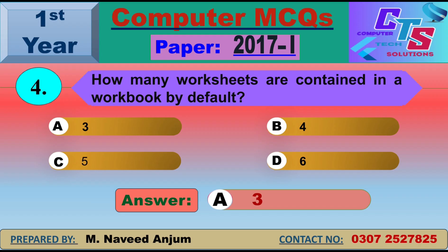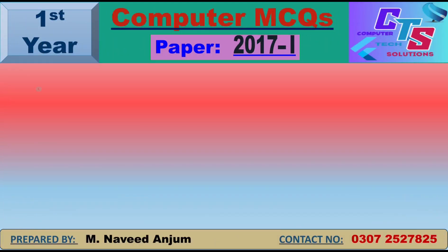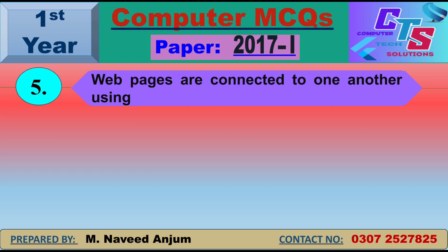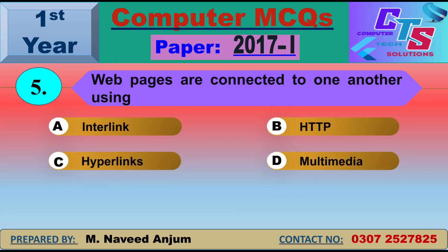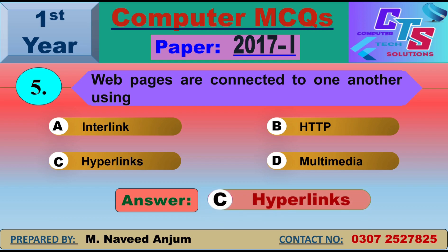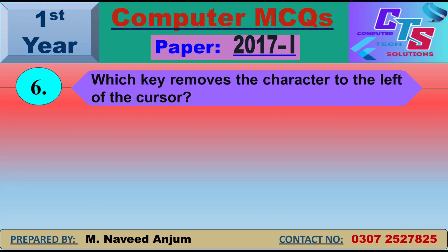Question number 5: Web pages are connected to one another using what? This is a repeated question. Web pages are connected using hyperlinks. Option C — hyperlinks — will be the right answer.